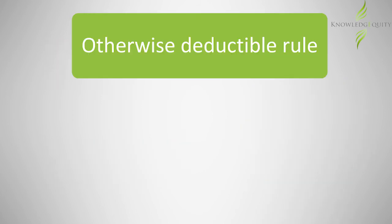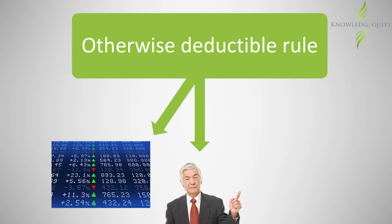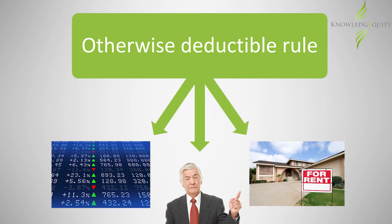It's important to note that the otherwise deductible rule is not restricted to earning employment income from the employer that provides the benefit. It applies to any income-producing activity that would have resulted in an allowable deduction in the employee's individual tax return.